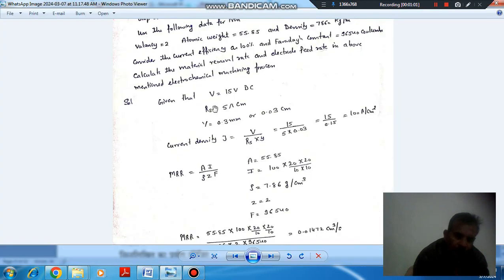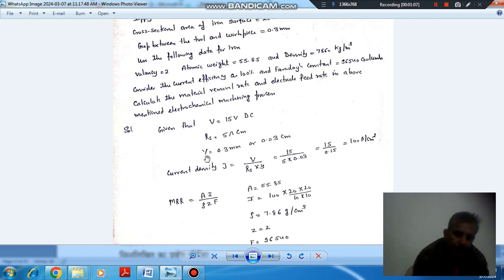Here, supply voltage is 15V DC and specific resistance is 5 ohm-cm. And gap is given as 0.3 mm or 0.03 cm. So now, from these three data, we can find current density that is V by RS into Y. Putting values, current density is 100 ampere per centimeter square.